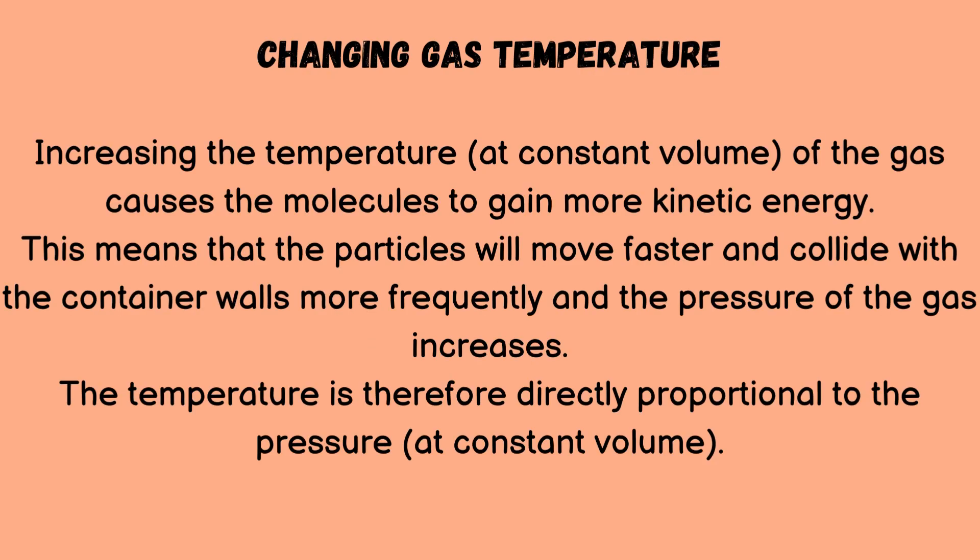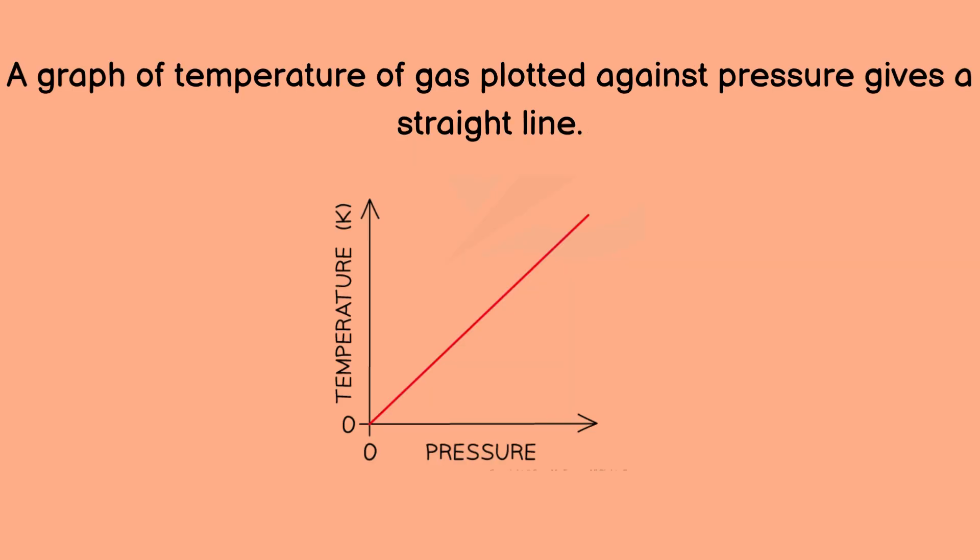Increasing the temperature at constant volume of the gas causes the molecules to gain more kinetic energy. This means that the particles will move faster and collide with the container walls more frequently, and the pressure of the gas increases. The temperature is therefore directly proportional to the pressure at constant volume. A graph of temperature of gas plotted against pressure gives a straight line.